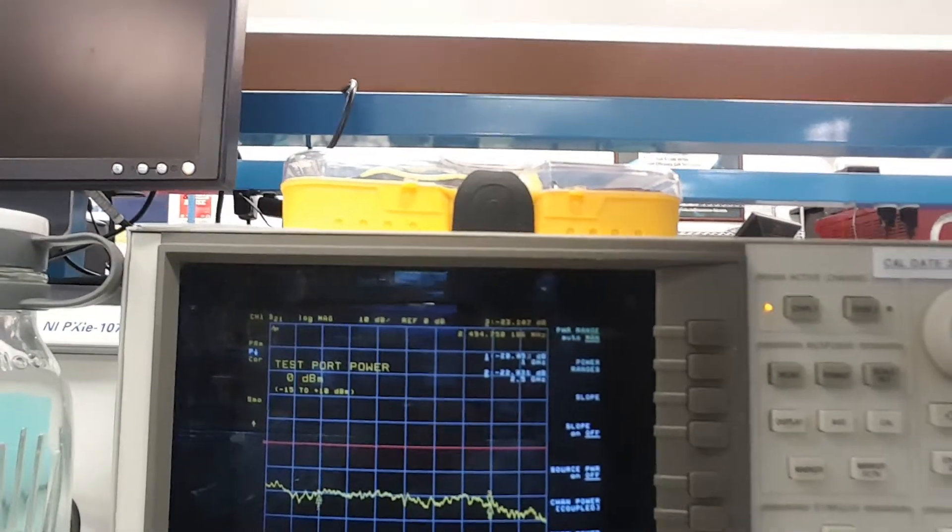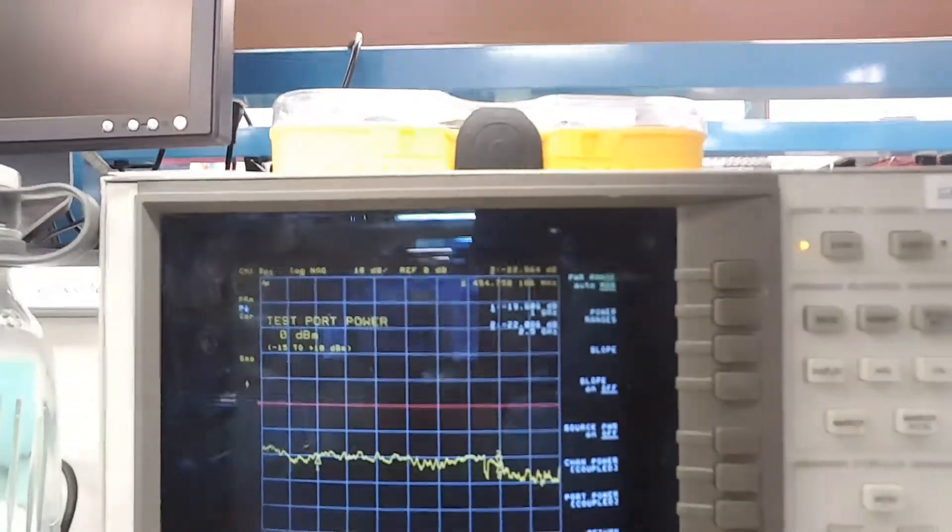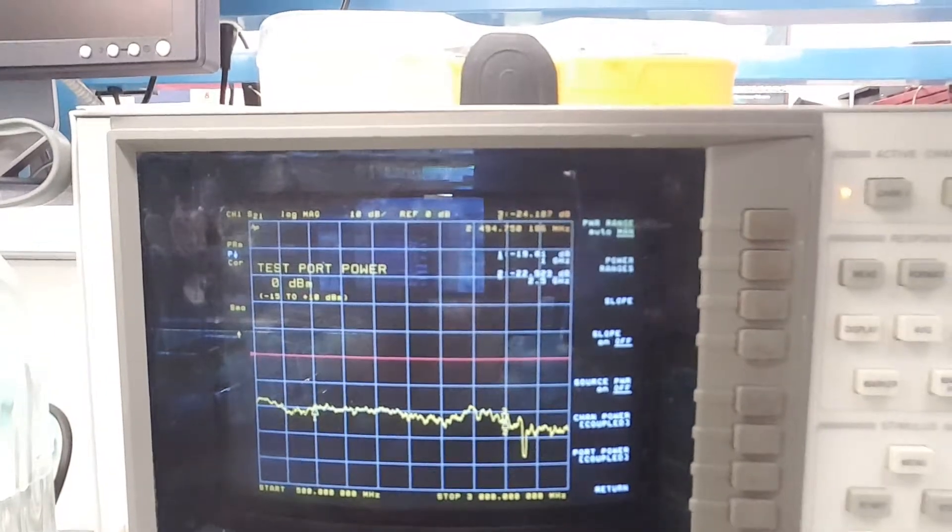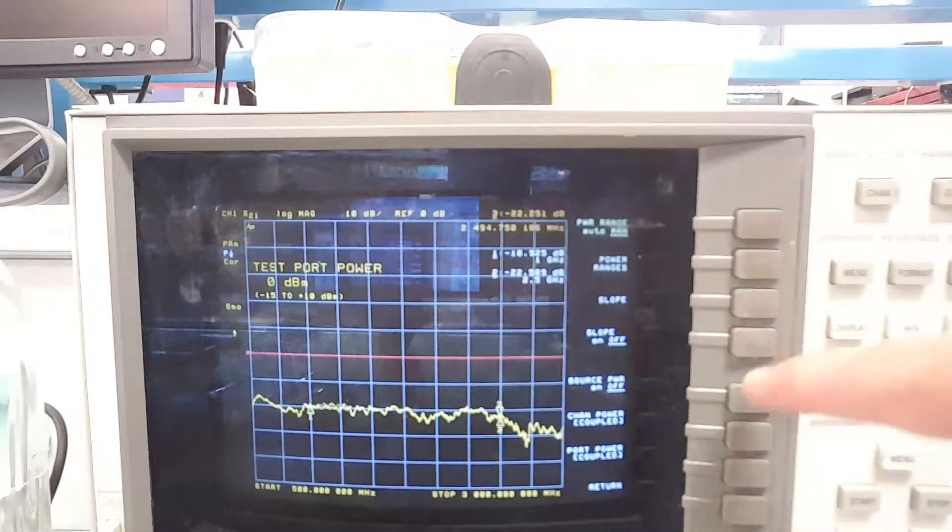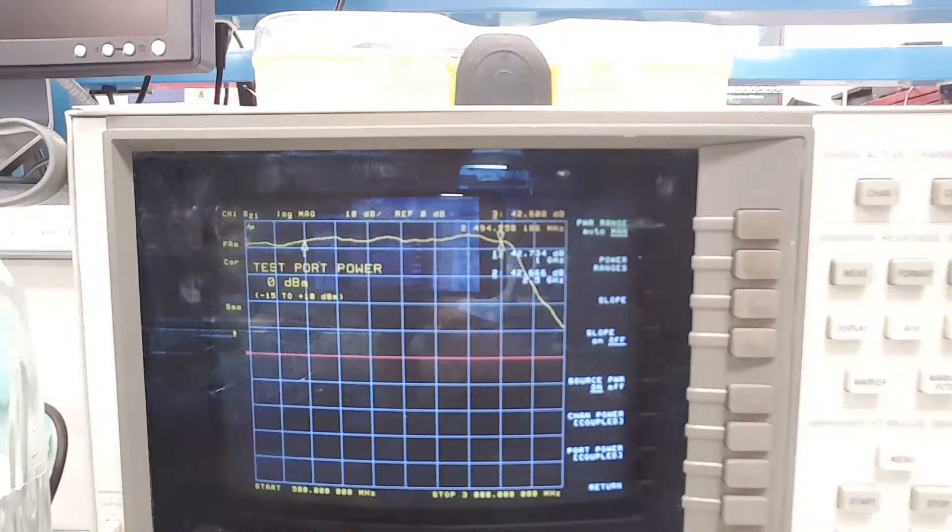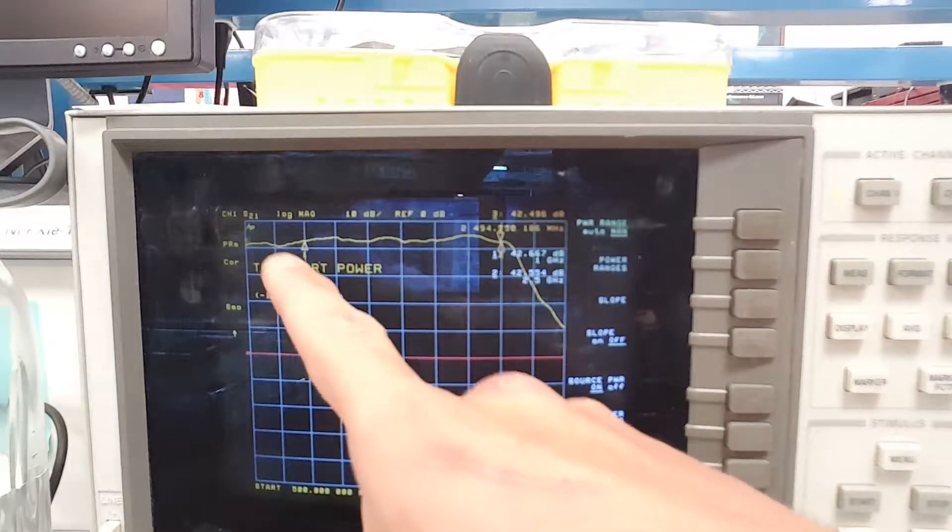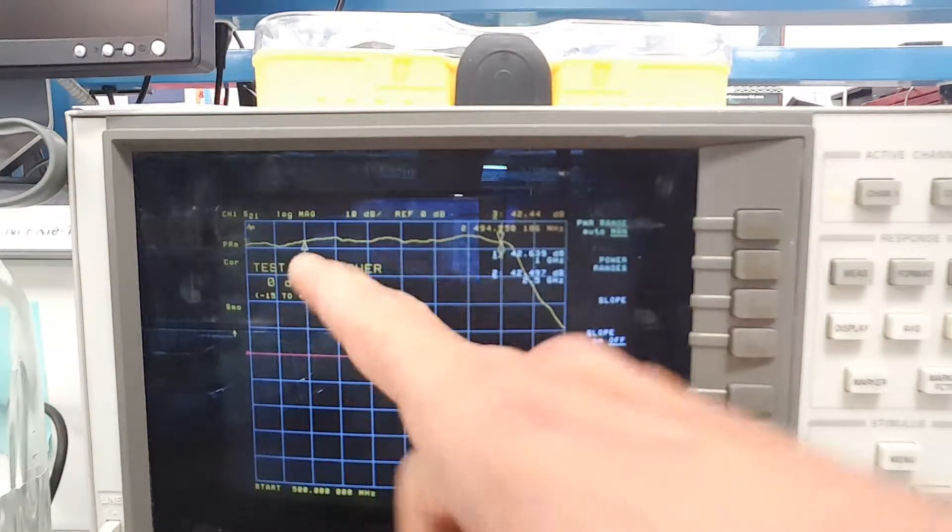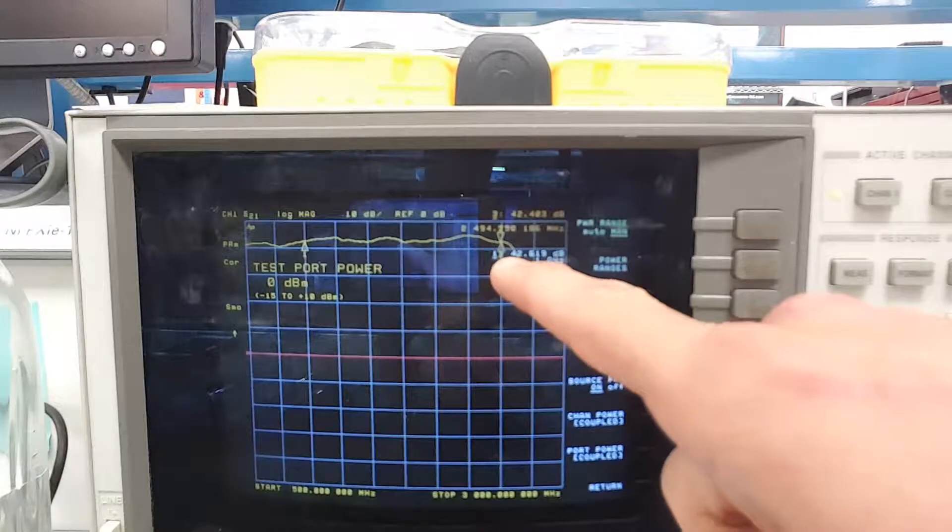So now we'll take a closer look here at the network analyzer and see how it performs. I have marker one set at one gigahertz. Marker two at 2.5 gigahertz.